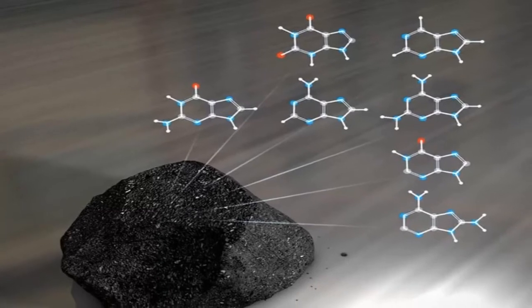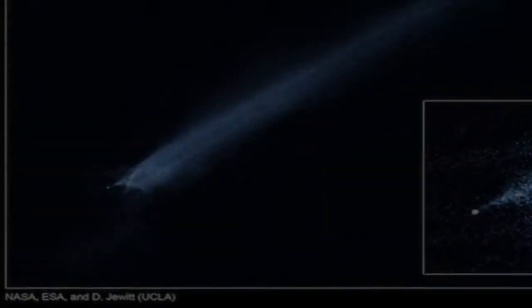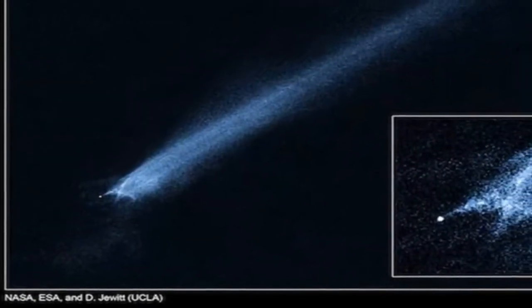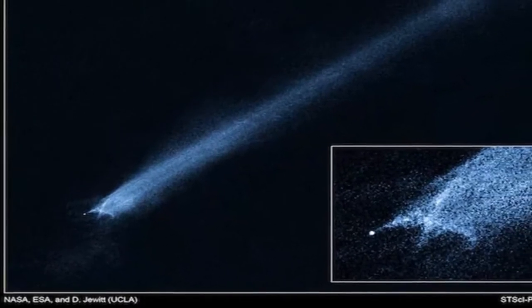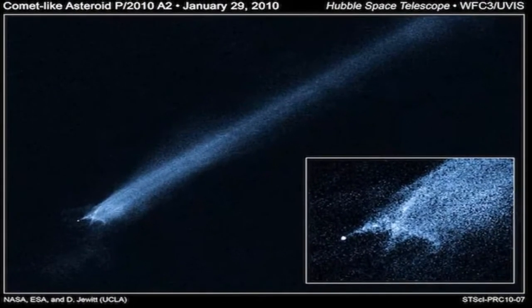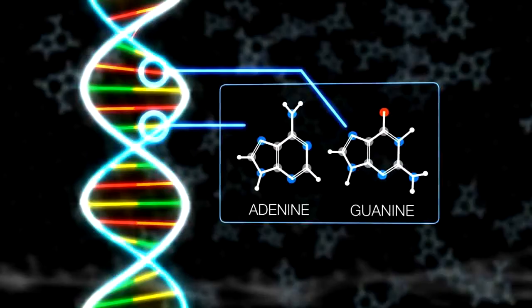Past research had revealed a range of building blocks of life in meteorites, such as the amino acids that make up proteins. Space rocks just like these may have been a vital source of the organic compounds that gave rise to life on Earth.